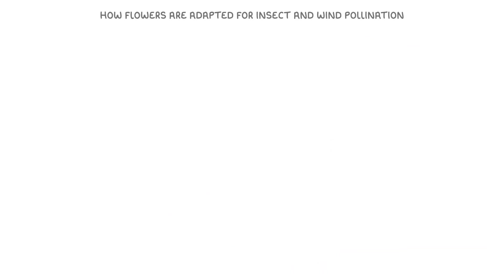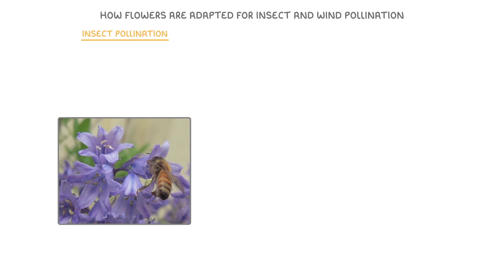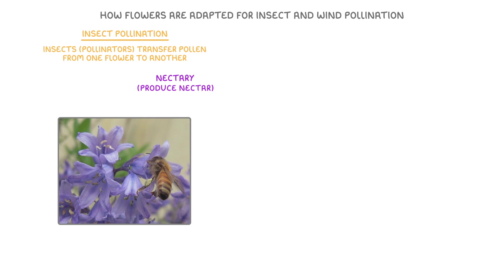Now let's look at how flowers are adapted for insect and wind pollination. Starting with insect pollination, this is when insects like bees, flies, moths, or butterflies — called pollinators — transfer pollen from one flower to another. Flowers that use this type of pollination have lots of adaptations to attract insects. One adaptation is having a nectary. Nectaries produce nectar, the sugary fluid that some insects eat, tempting them to visit the flower. Nectaries are found at the bottom of the flower so that insects brush against the anthers on their way in, rubbing pollen onto their bodies.